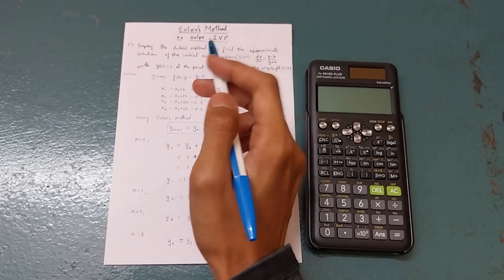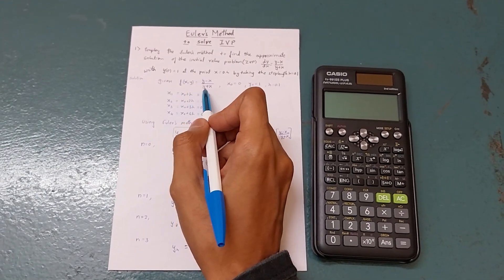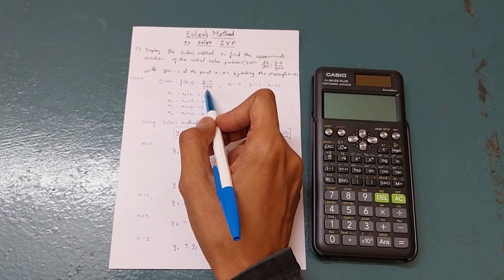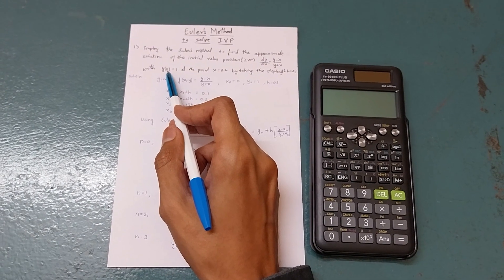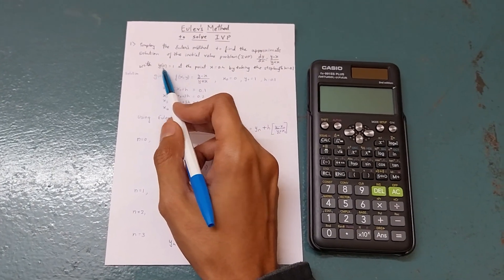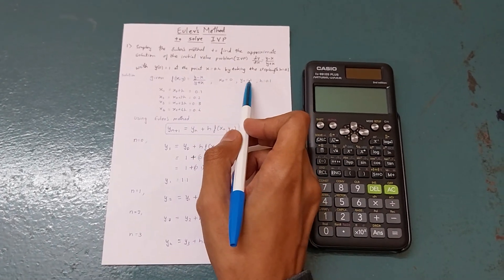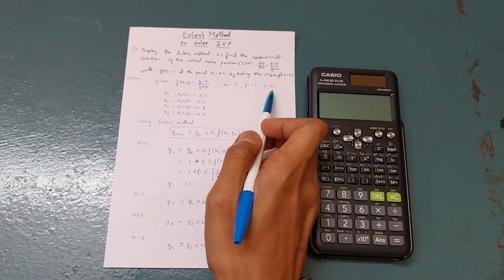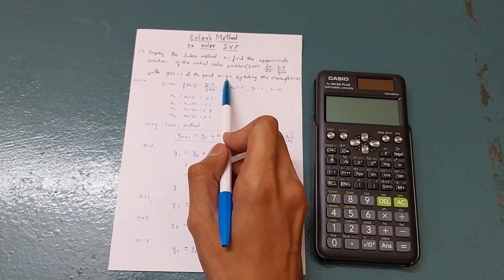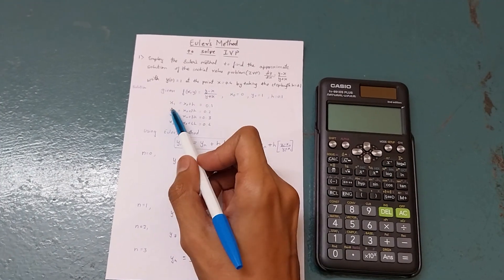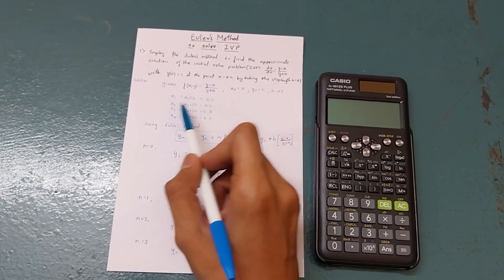Now we'll write what is given. Given f of x comma y equals y minus x divided by y plus x. x naught is 0, y naught is 1 - this is the initial value problem. h is 0.1 that is also given. We need to find up to x equals 0.4.